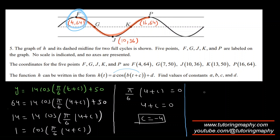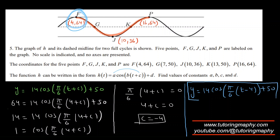If you have a different answer, post it and I'll check if it works. Our final answer is y = 14 cos(π/6 · (t − 4)) + 50. Keep in mind you will likely get an FRQ like this on your AP exam — one of the parts will be just like that.